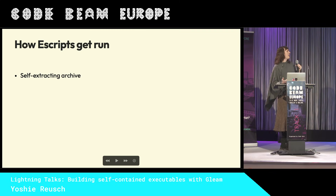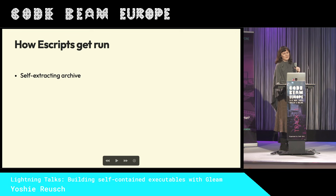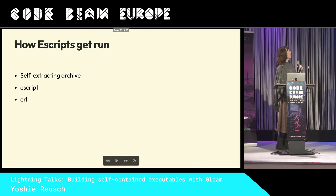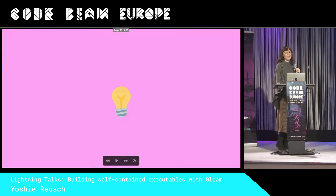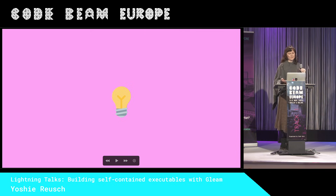So for that, I looked at how e-scripts are run. First we have our self-extracting archive, that calls e-script, then we call Erlang, then we call Erlang_sec, and finally we call the VM itself. Maybe we can skip all those steps because we're doing the same things every time.